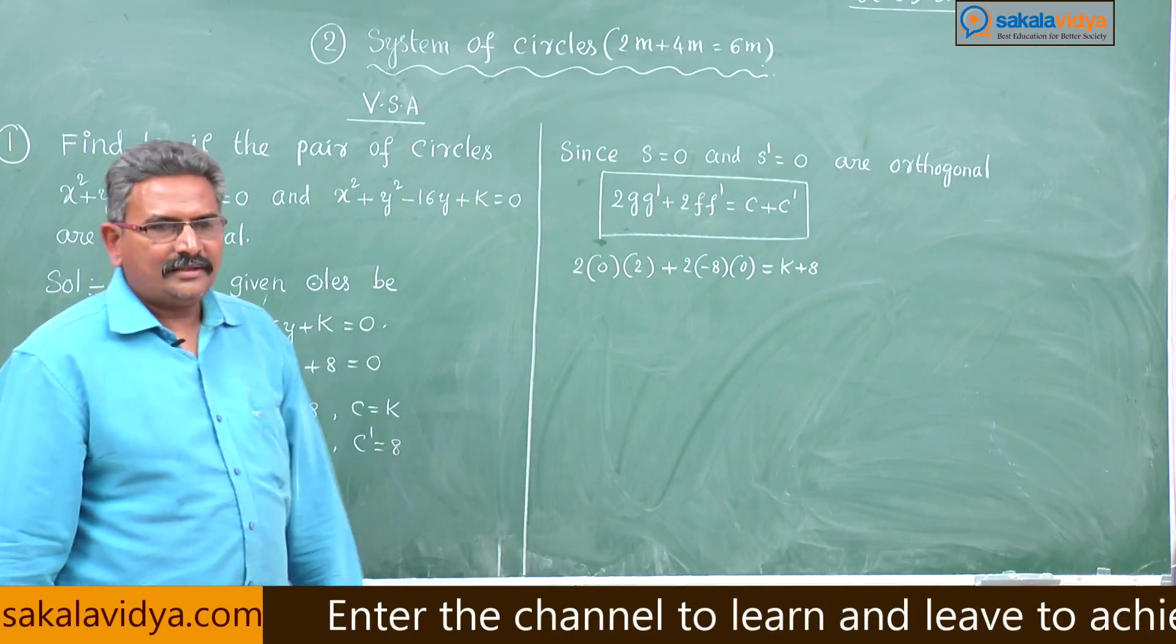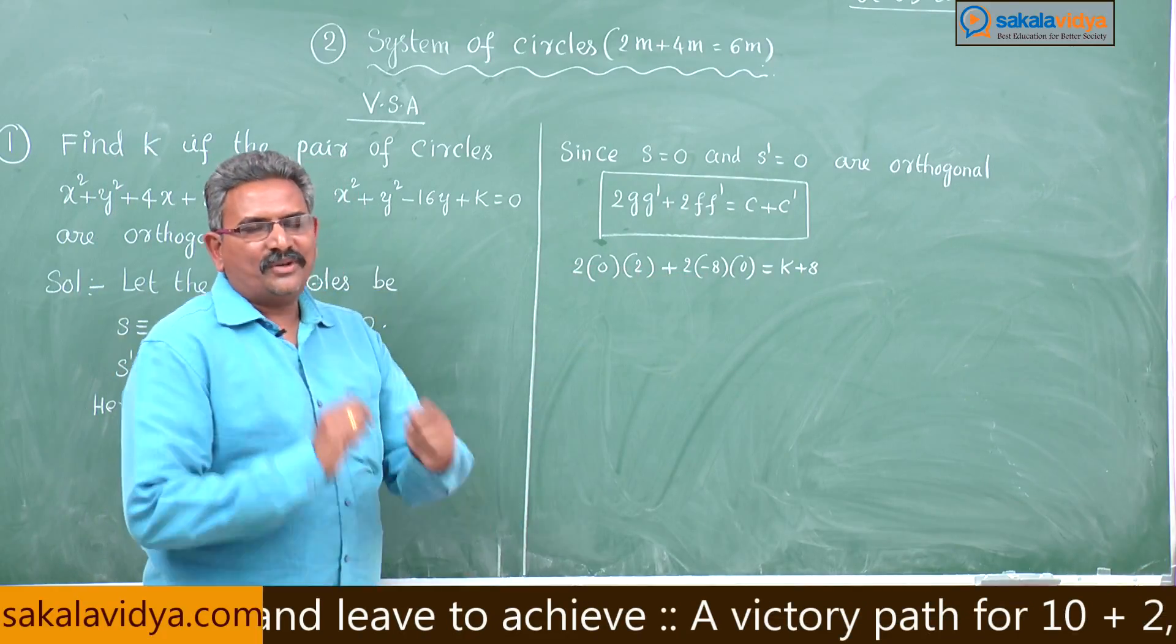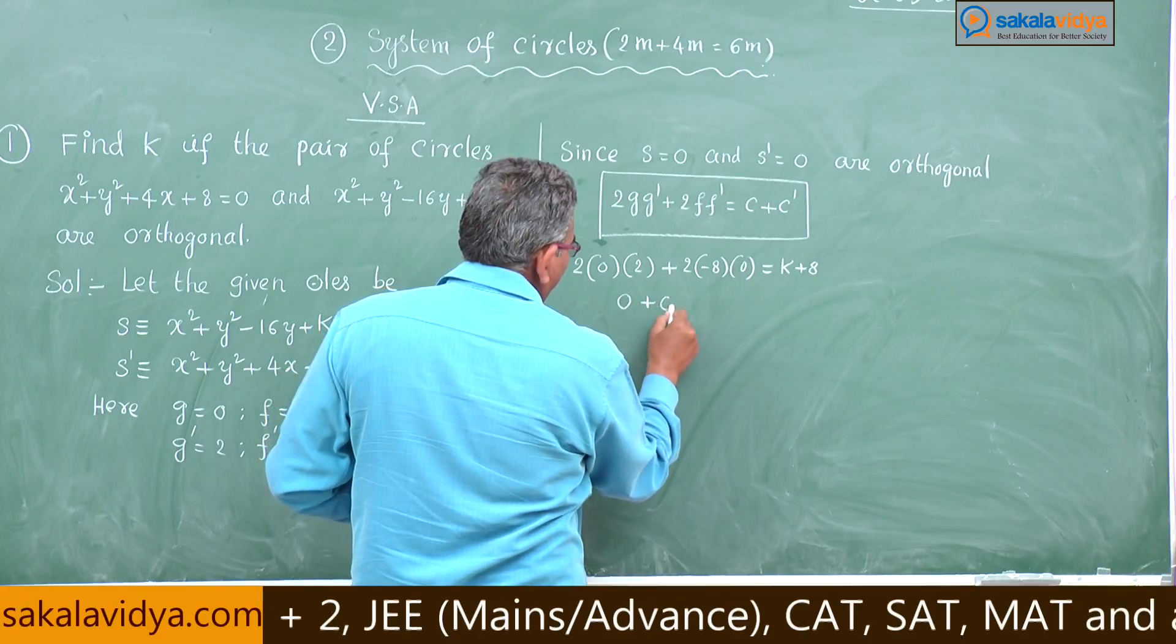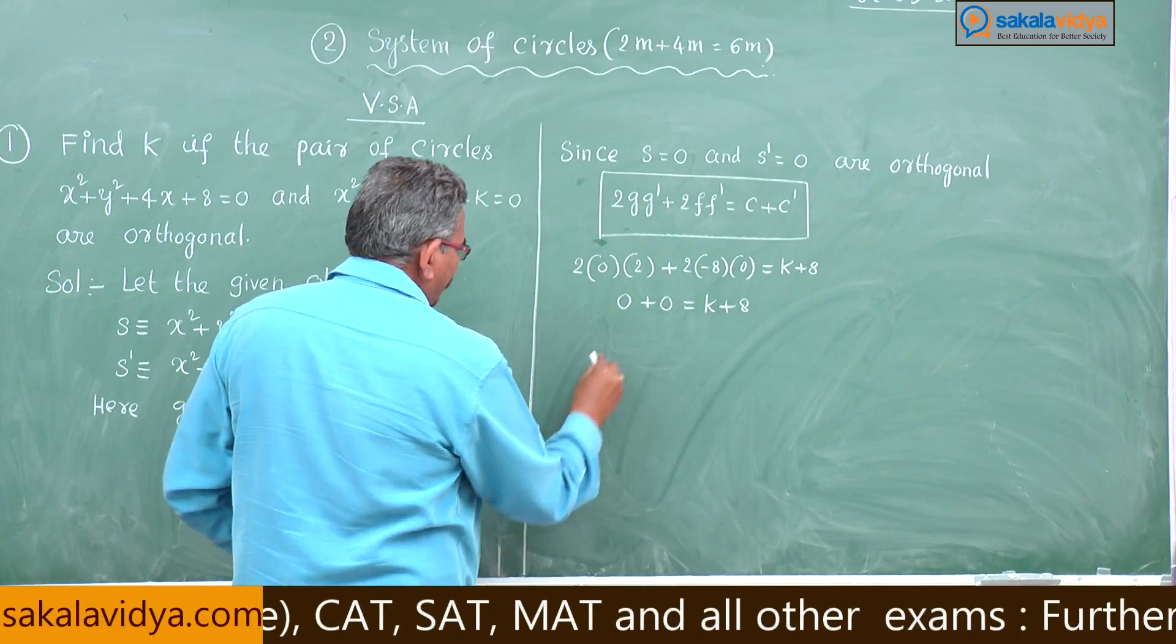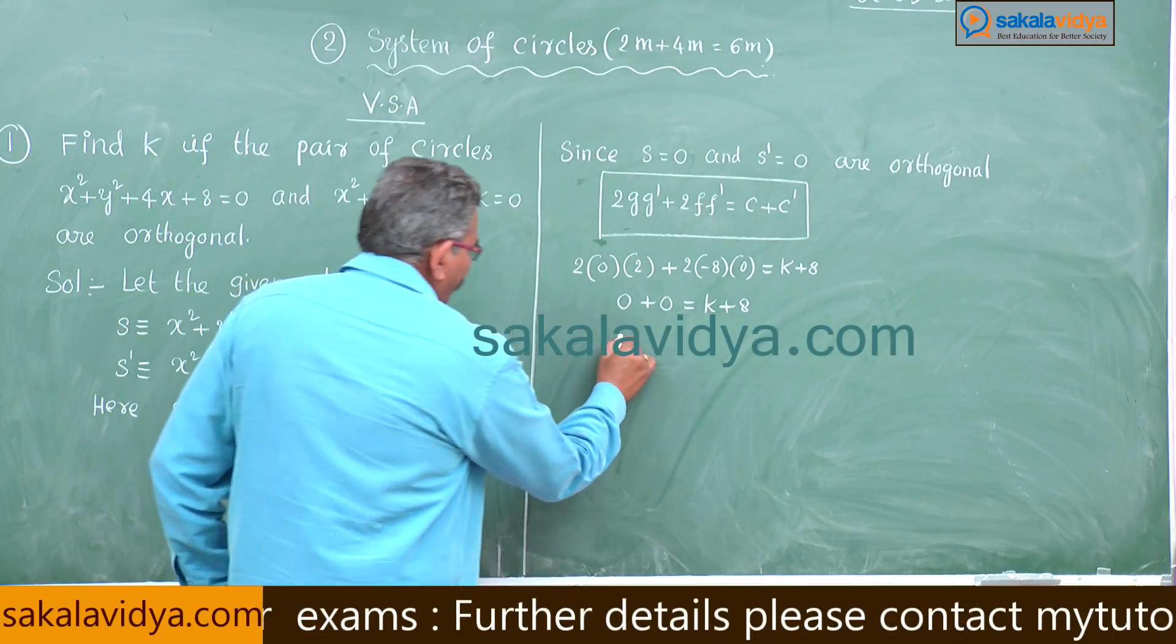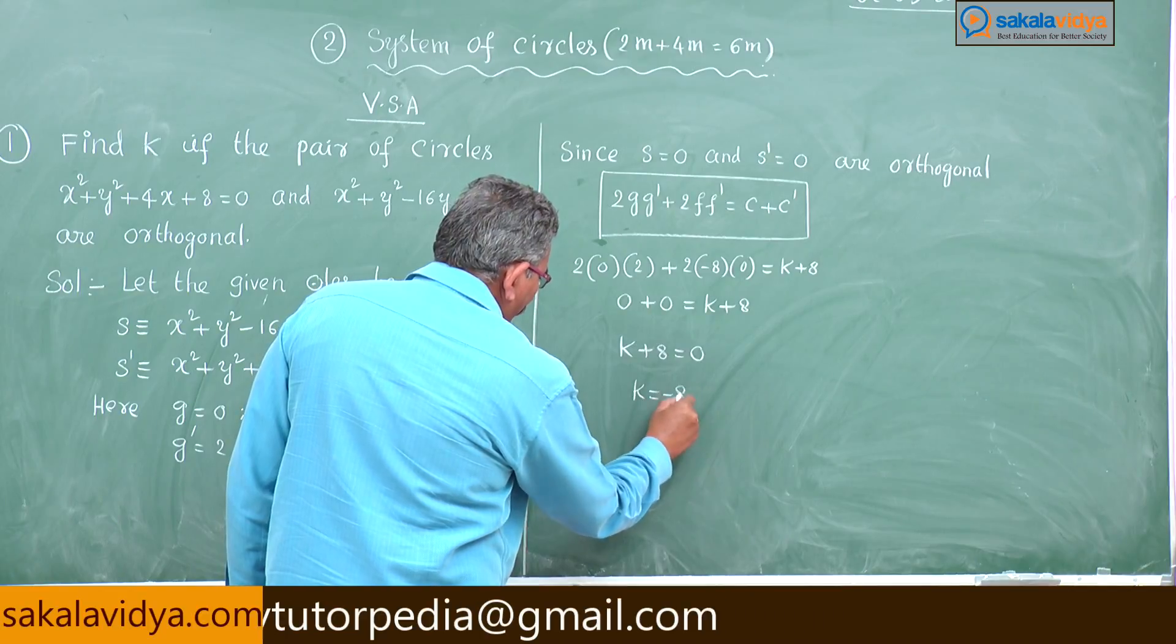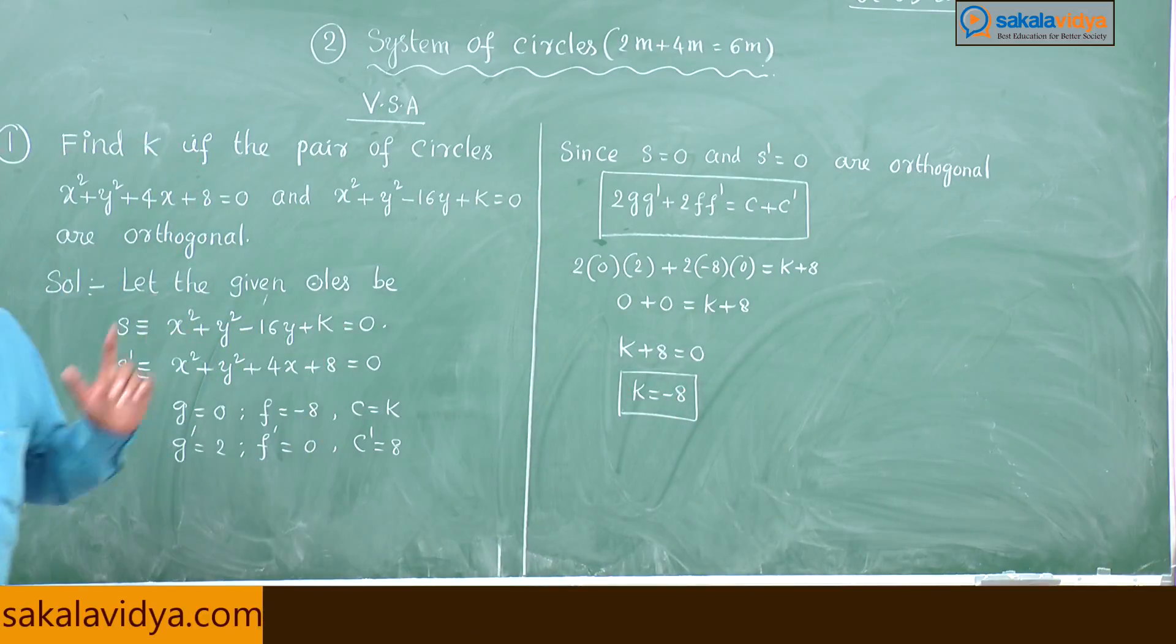Very interesting! These are products of 3 numbers. If one of the numbers is 0, the product becomes 0. You need not multiply: 0 + 0 = k + 8. So, we can write k + 8 = 0. Therefore, k = -8. This is the answer.